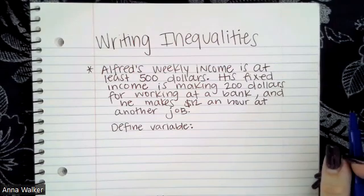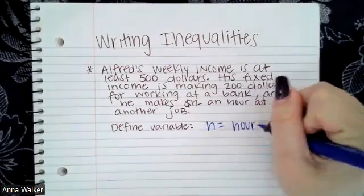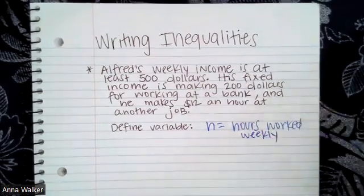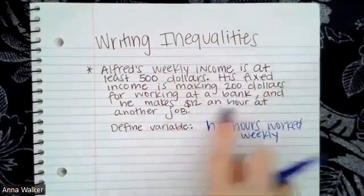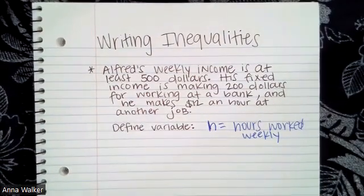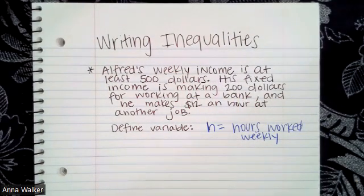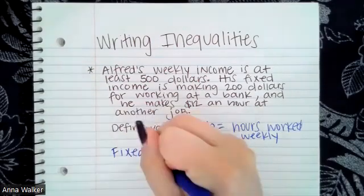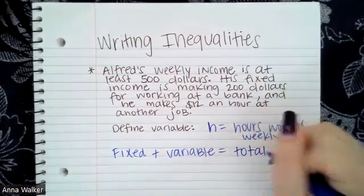So let's just use H to represent the number of hours worked weekly. We're trying to write an inequality that represents all of the money that Alfred makes. We don't know how many hours he works at his other job, so H is going to be the number of hours he works per week at that job. One thing you need to know about income is that you need to take your fixed income, add the variable income, and that's going to equal your total income.